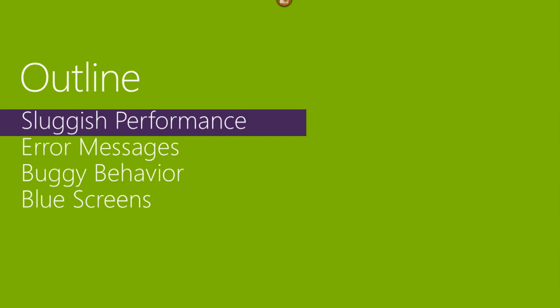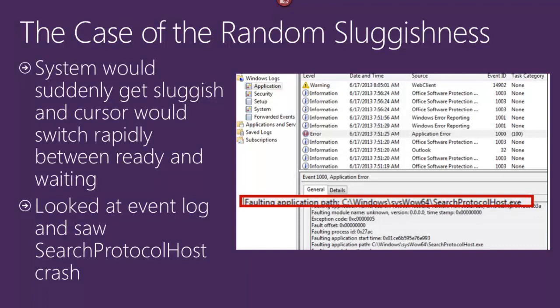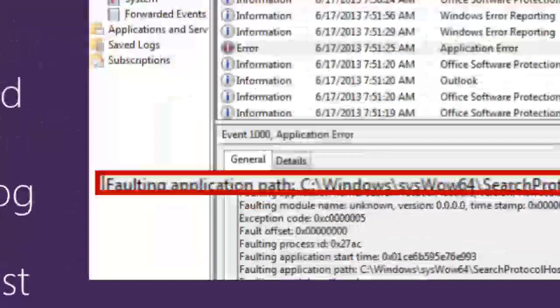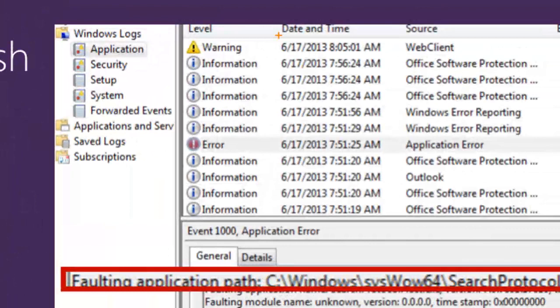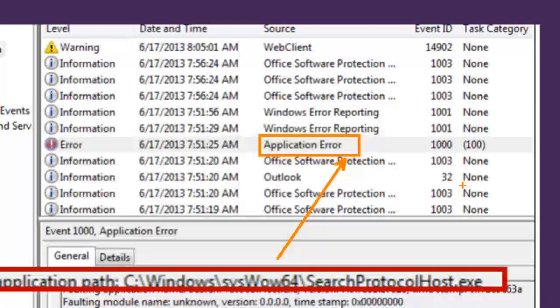Let's get started with some scenarios. The first category is sluggish performance. We'll start with a real case where a system would suddenly get sluggish and the cursor would start to flash back and forth between waiting and not waiting very quickly — so something was going on in the background. The first thing they did was open the event log, something most sysadmins are well-trained to do when something goes wrong. They opened the application event log and found an error: the faulting application was searchprotocolhost.exe.